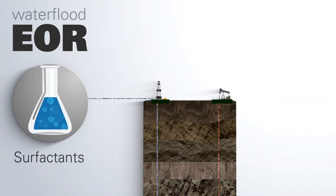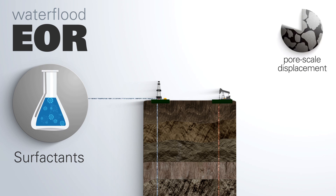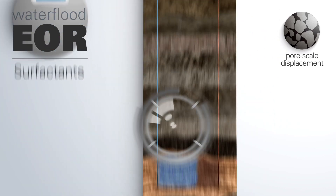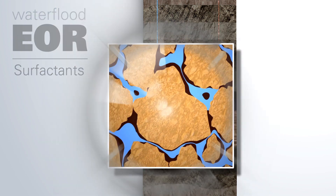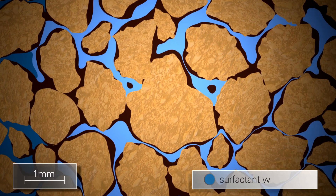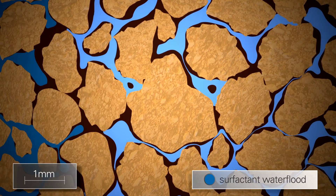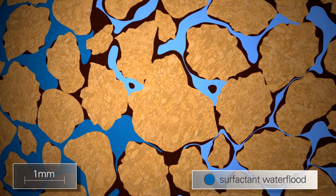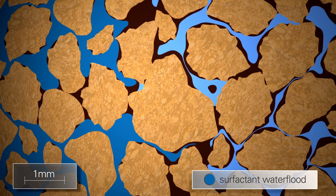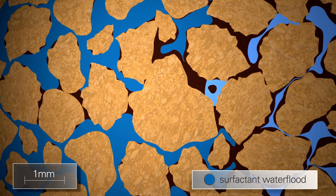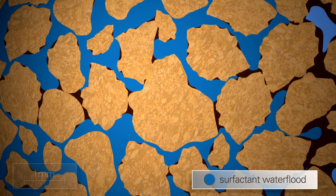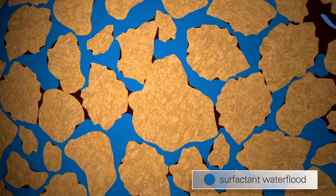Adding surfactants to improve pore-scale displacement. When surfactants get in contact with the rock surface, they work like detergent, releasing the oil stuck on the rock surface or trapped in the pore spaces, allowing more of it to be pushed to the producers.